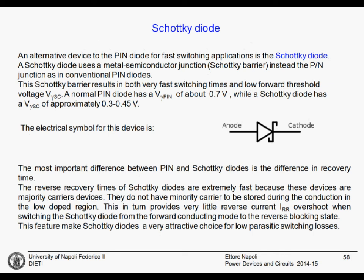We conclude the lecture regarding the power diode, which has been mostly concentrated and oriented to the PIN diode, with a few words regarding the Schottky diode. The Schottky diode behaves like a diode — it has a smaller on-state voltage drop, usually for very low currents. This is what we know from the basic courses of analog and digital electronics.